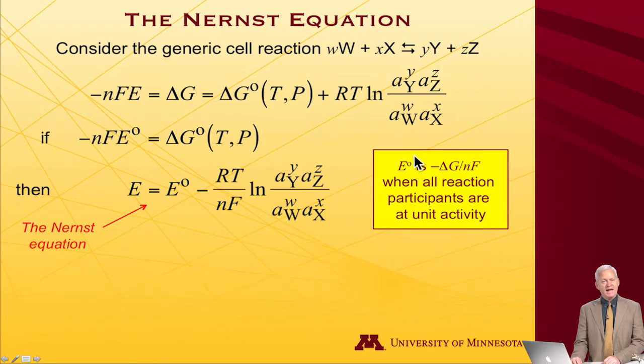And you can see that the standard potential is then minus delta G over NF when all the reaction participants are at unit activity. If all of these arguments are 1, then you get log of 1, this goes to 0, and you'll have E equal to E0.